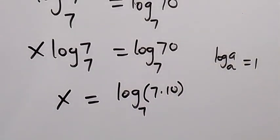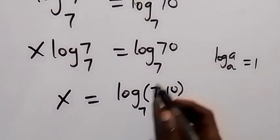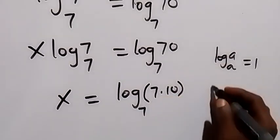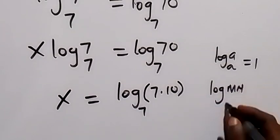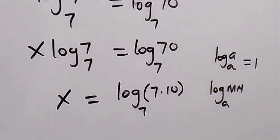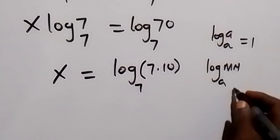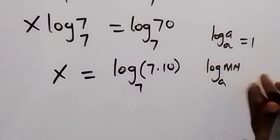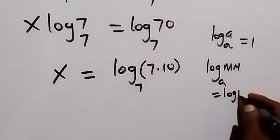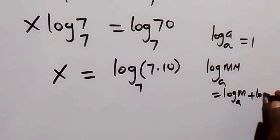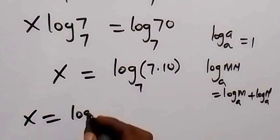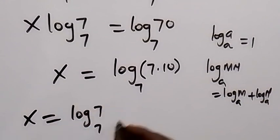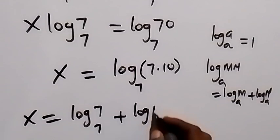And also in the next step, we can express log 70 and separate it. When we have log mn base a, we can separate this as log m base a plus log n base a. And when we apply that here, so x now will be equals to log 7 plus log 10 base 7.